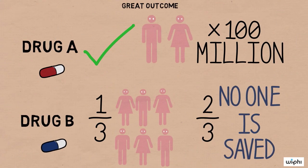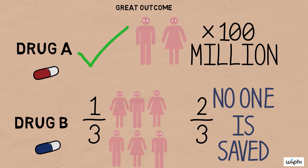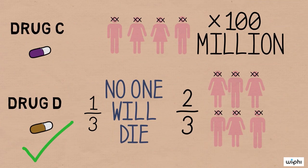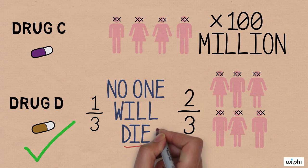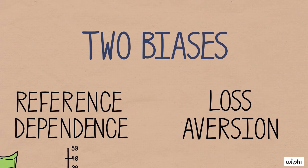The first scenario is described in terms of the number of lives saved. That's your reference point. You're thinking in terms of how many additional lives you can save. And in the second, you think relative to how many less lives you can lose. And that second part, worrying about losing lives, leads to the second bias that's affecting your choices, loss aversion.